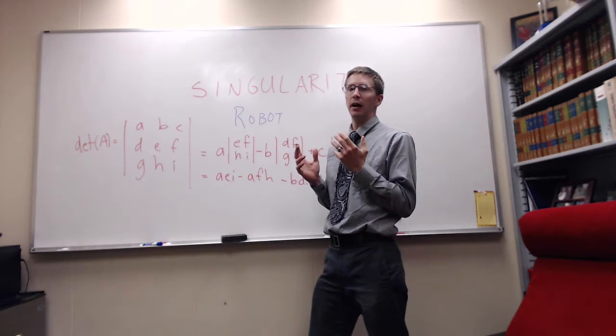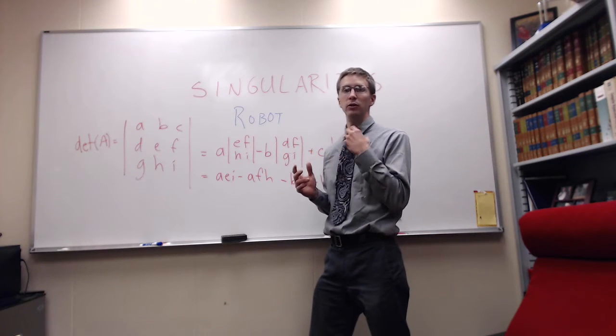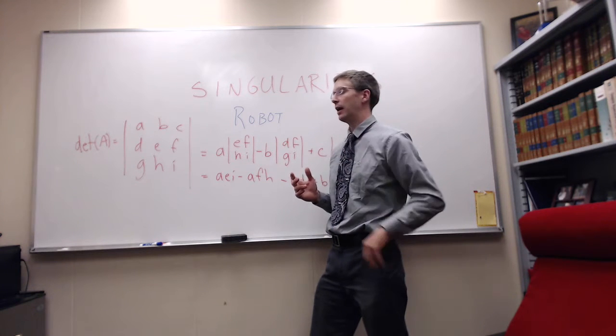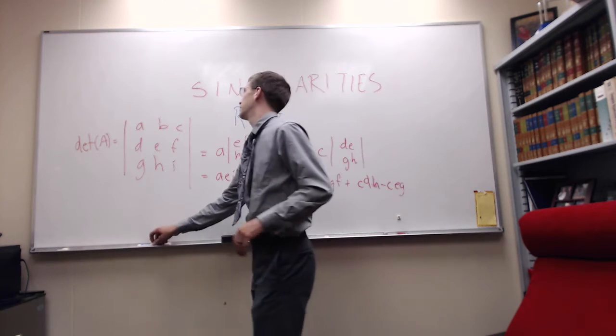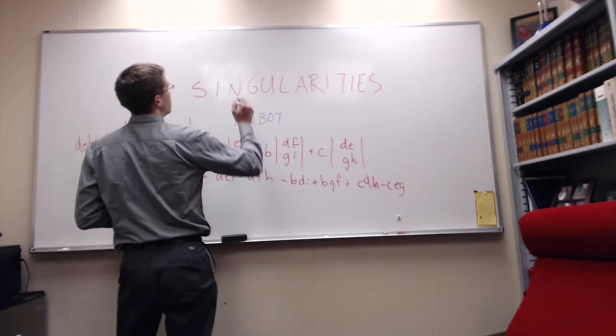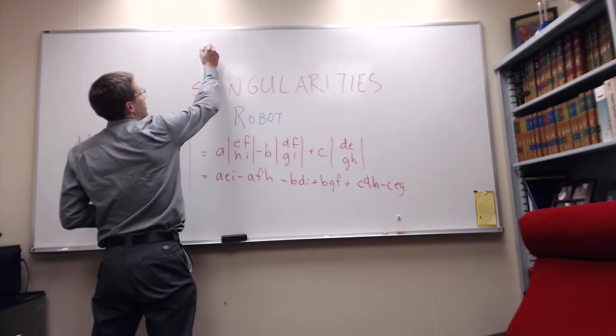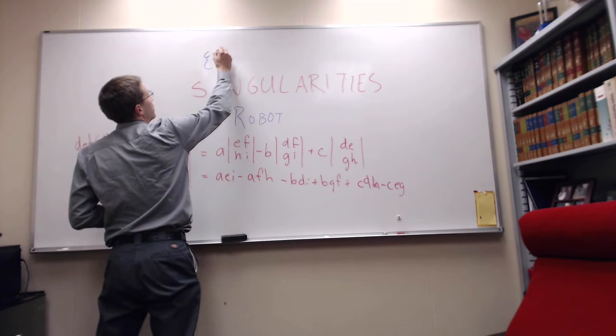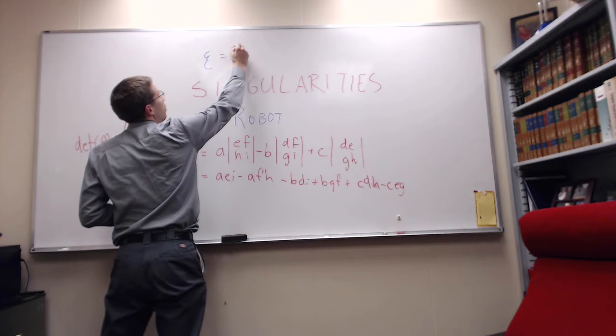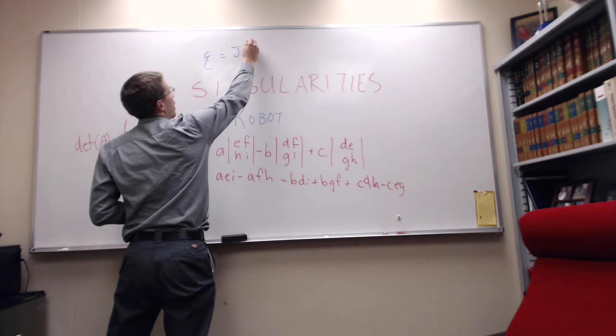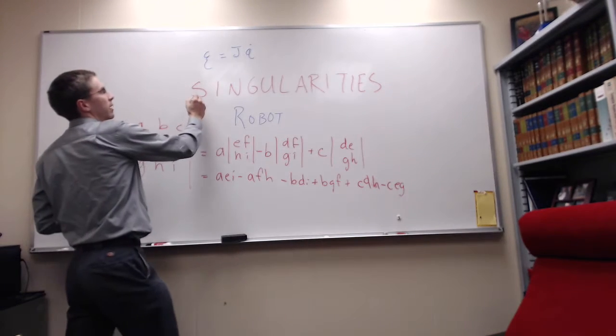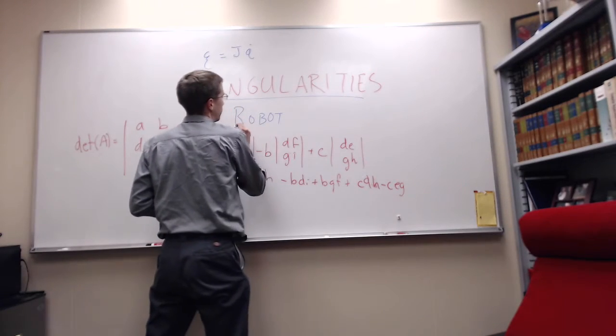The singularities are related to the Jacobian of a robot. Remember, the Jacobian allows us to go between joint velocities and end effector velocities. So the equation that we look at is that our end effector velocities is equal to the Jacobian times Q dot. And so we're going to look at the singularities of a robot.